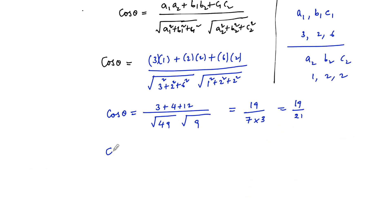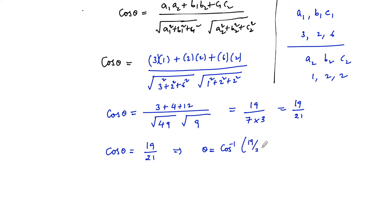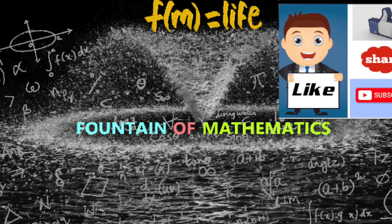Since cos theta is equal to 19/21, we get theta is equal to cos inverse of 19/21. Therefore, the angle between the two given lines is cos⁻¹(19/21).